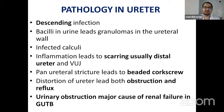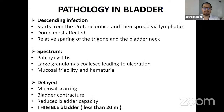Pathology in the ureter: from descending infection from the kidney. Bacilli in the urine lead to granulomas in the ureter. Inflammation leads to scarring, usually of the distal ureter and VUJ. There may be pan-ureteritis leading to a beaded cork-screw appearance. Distortion of the ureter can lead to both obstruction and reflux, and ureteral obstruction is a major cause of renal failure in GUTB. Pathology in the bladder is from descending infection, usually starting from the ureteric orifice, spreading via lymphatics. The dome is the most commonly affected site with relative sparing of the trigone and bladder neck. It can present as patchy cystitis, large granulomas with ulcerations, or hematuria. In the delayed phase, mucosal scarring and bladder contraction reduce bladder capacity, resulting in a thimble bladder with capacity less than 20 ml.